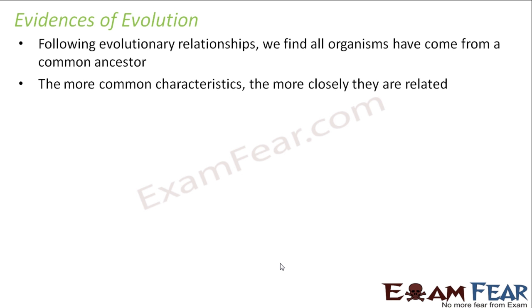Let me give you an example. Suppose there is a couple, and this couple gives birth to two kids. These two kids are brothers and they look quite similar to each other — not exactly similar because they are not twins, but they have many similarities. One of them is fair, the other is a little dusky; one has black hair, the other has brown hair. But their features are quite similar, so we can make out that they are brothers. We would have seen that we have similarities with our siblings.